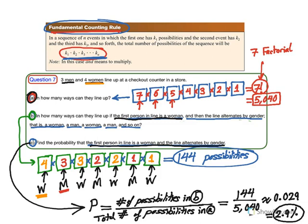This means that when seven people — three men and four women — line up randomly, the probability that a woman is first and genders alternate is only about 2.9%. That's why you almost never see this arrangement at the supermarket. The probability is already very small with just seven people — imagine how much smaller it would be with more people. You can try similar questions by changing the number of men and women and calculating the probability of a specific arrangement.